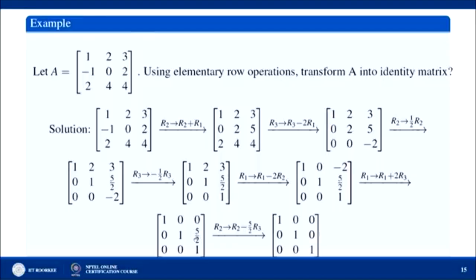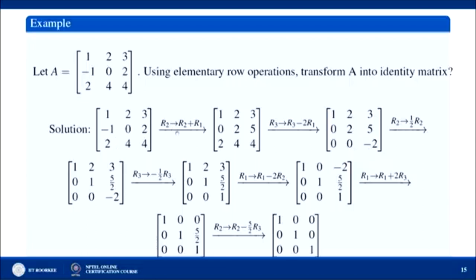Finally, to make 0 in position (2,3), replace R₂ by R₂ - (5/2)R₃: this gives the identity matrix. So we have applied a series of elementary row operations to convert matrix A into an identity matrix. Any intermediate matrix obtained is a row equivalent form of the original matrix A.